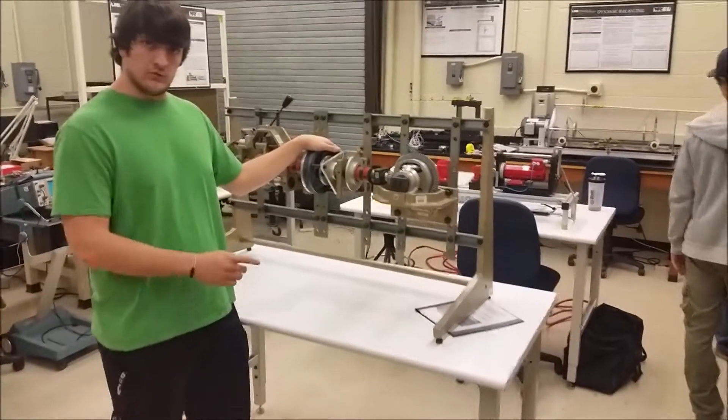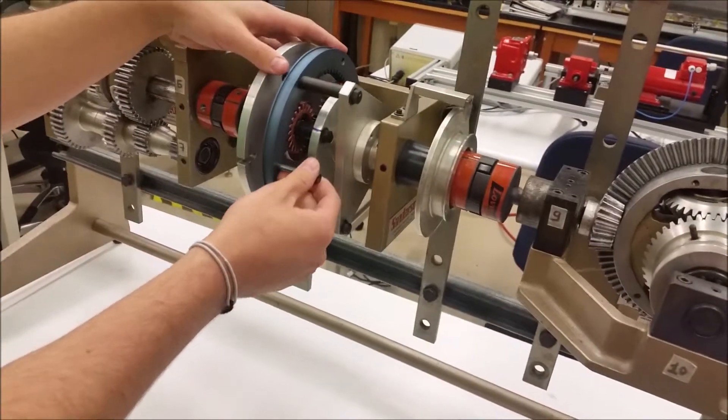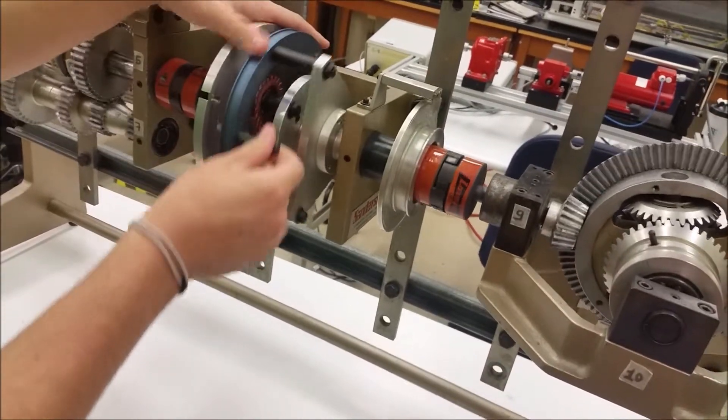The first step after you've counted the teeth is to make sure that the planetary gear is locked with this pin. It needs to be in this groove here. That way it will lock and the planetary gear will not spin.